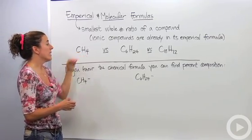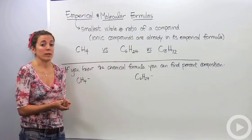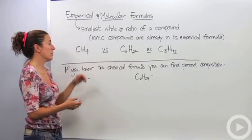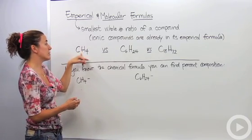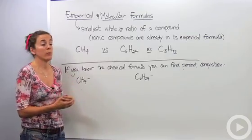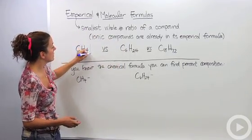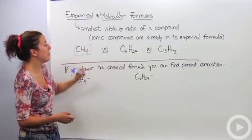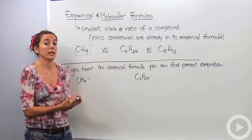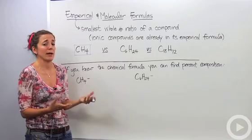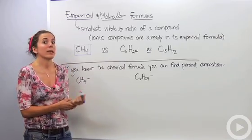So we have CH4, and CH4 actually is an empirical formula. It's already in its lowest ratio. It has basically the subscripts of 1 and 4, and we can't reduce those anymore. So this actually is an empirical formula. However, it also is a molecular formula. There is a compound out there that has the formula CH4, methane, a very common compound. So this is an empirical formula and a molecular formula.